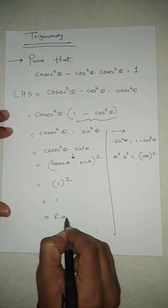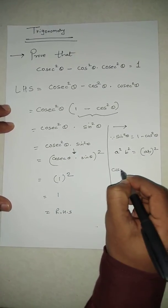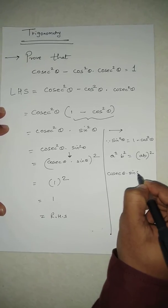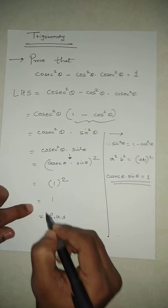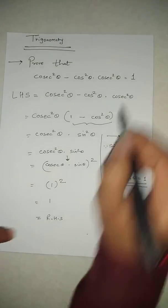Which is equal to RHS. So cosec θ · sin θ is always equal to 1, so it equals 1, which is equal to RHS. Thank you.